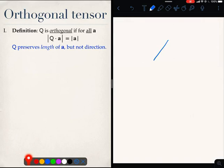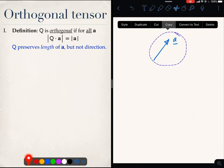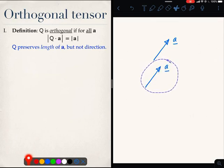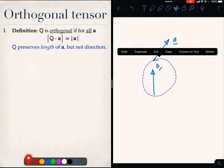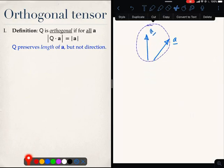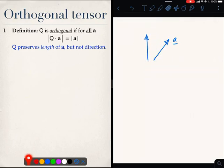So in terms of pictures, if this was A, then QA must be of the same length. So this would be QA. These lengths are the same. Of course, they will not be in the same direction. So that is what an orthogonal tensor is.